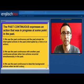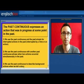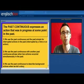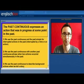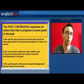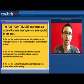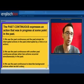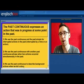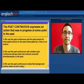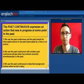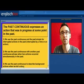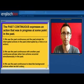We've looked at the structure, but when do we use the past continuous? The past continuous expresses an action that was in progress at some point in the past. We often use it for interrupted actions with a past simple action. We can also use it to describe two actions that were happening at the same time in the past. And finally, we often use it to describe background events in a story.